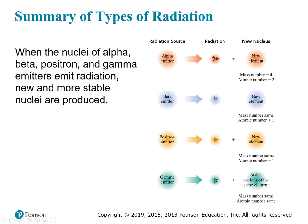Here's a summary of types of radiation. We've done sample problems for alpha, beta, and gamma emitters. We haven't done one for a positron emitter, but it's pretty much the same as beta — except your atomic number decreases by one instead of increasing. We'll do an example of that in class on Tuesday.